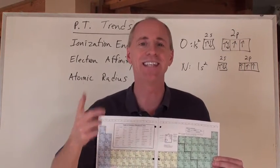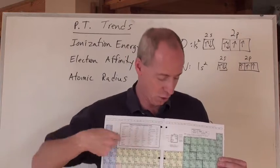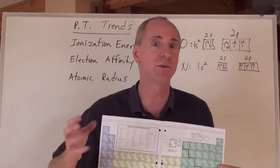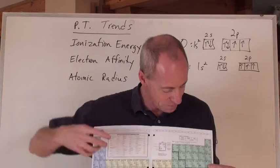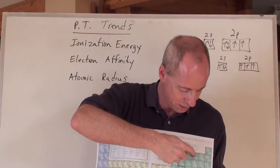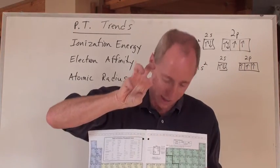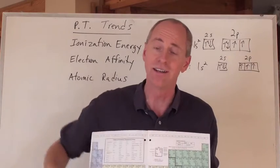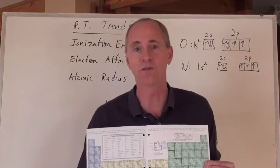Yes, elements get heavier as you go across. They gain more protons and more electrons, but their radius shrinks. So that means actually that oxygen is going to be a smaller atom than boron is. And it's absolutely true, but oxygen weighs more.